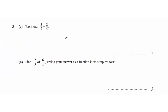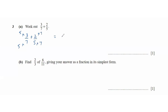Question 3 says work out 3 over 7 plus 2 over 5. We start by making the denominators equal for both fractions, because whenever we're adding unlike denominators, the first step is to make them equal. We multiply the first fraction by 5 and the second fraction by 7. That gives us 15 over 35 plus 14 over 35.